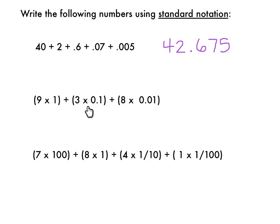Now, in this problem, they're using the parentheses and decimals. I have 9 times 1, so that's 9 whole, plus 3 times 1 tenth, so that would be 3 tenths, plus 8 times 1 hundredth, which would be 8 hundredths. So this number is 9 and 38 hundredths.